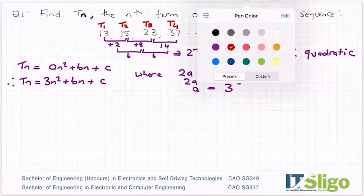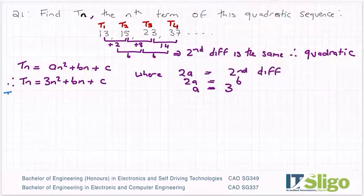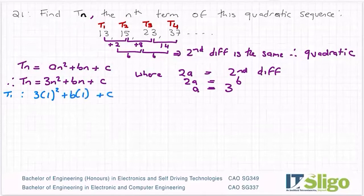The first one I'm going to pick is T1, my first term. So what have I done there? I've replaced n with one. So everywhere along, I'm going to replace n with one. So here becomes three times one squared plus b times one plus c. One squared - make sure because it's BOMDAS you have to do the squared first before you multiply by the three. So one squared is one times three plus b times one is b plus c.